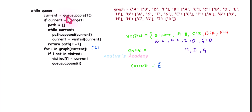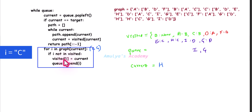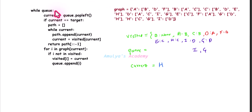Queue is not empty, so current becomes H via queue dot pop left. H is not our target. For I in graph of H: C and G. I becomes C — C is already in visited, skip. I becomes G — G is already present in visited, skip. No more adjacent nodes, come out of the for loop. The while loop continues as long as queue is not empty.